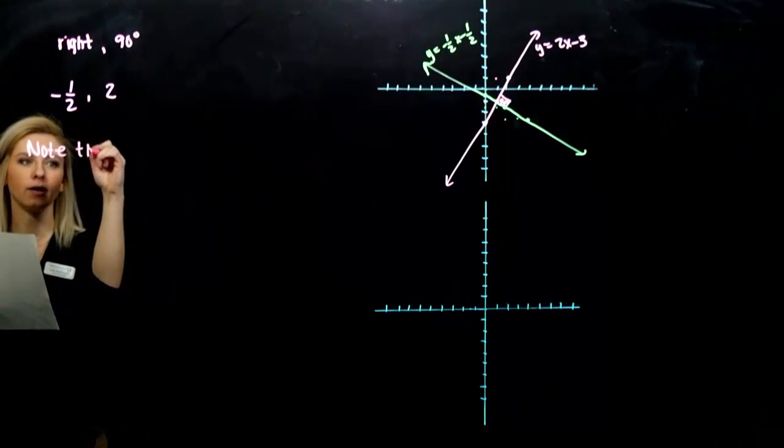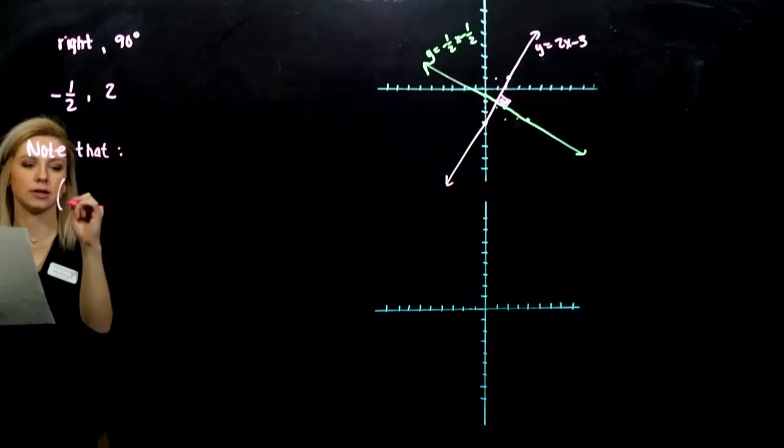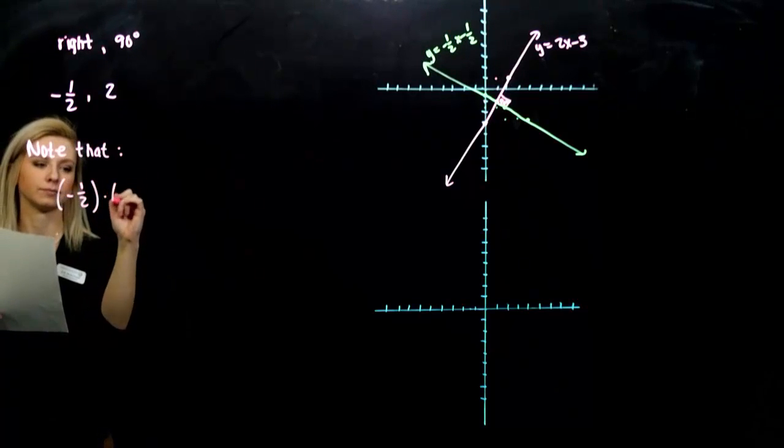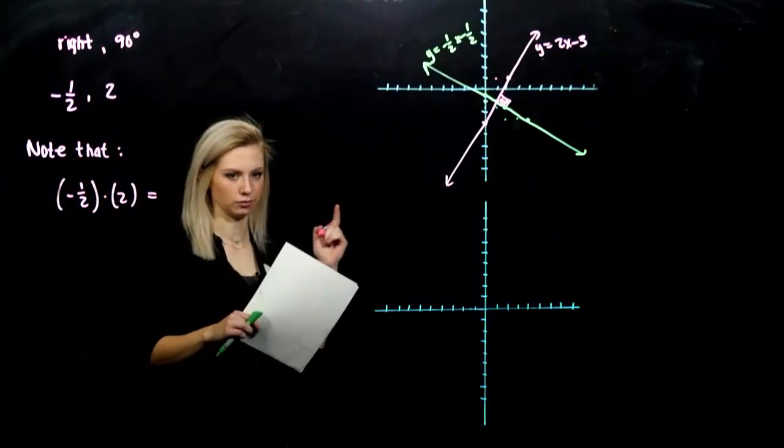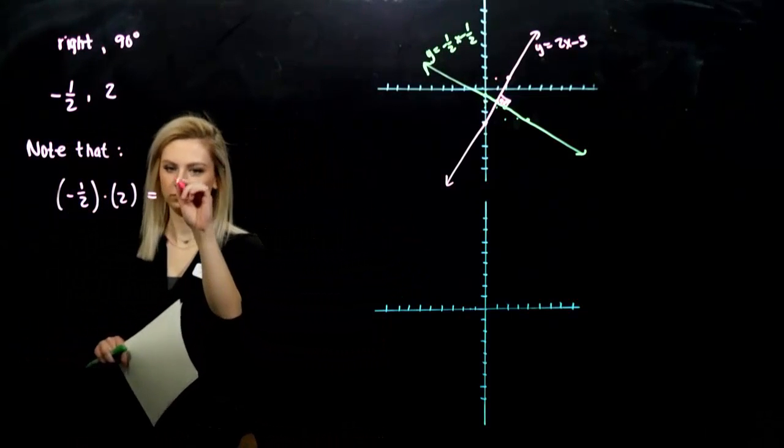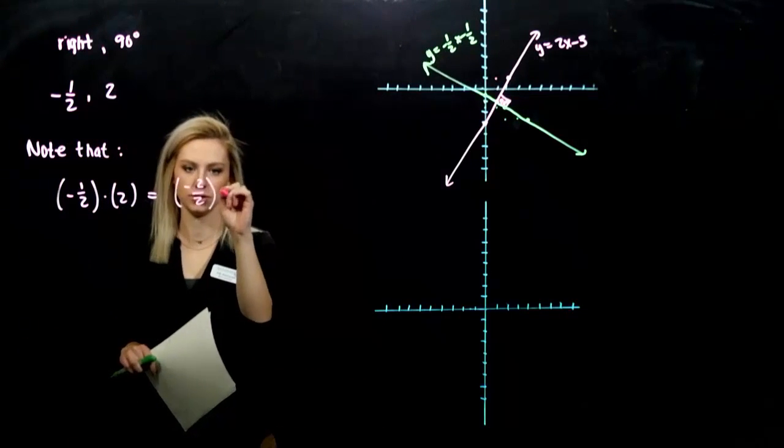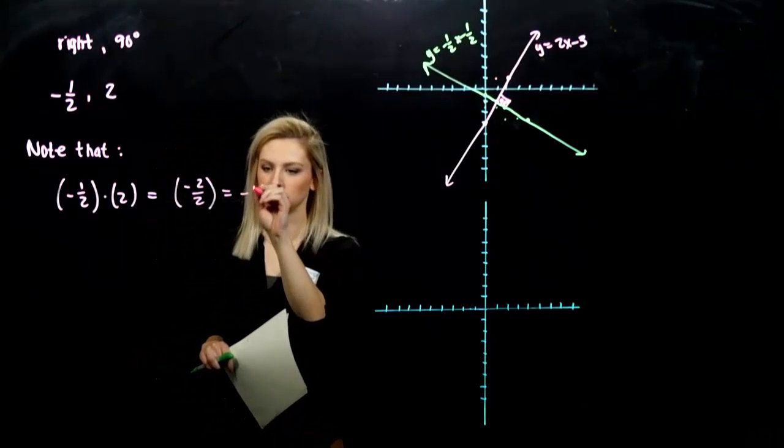Note that if I multiply these two together, what do I get out? Okay, so 2 times 1, I get the minus 2 over 2, which is what? Negative 1.